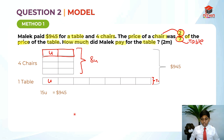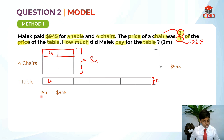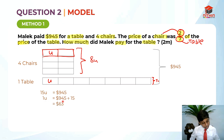After you get a certain number of units, if you know this many units is equal to that amount, you must always find 1 unit. So you find 1 unit over here: $945 divided by 15 gives you $63, which is 1 unit.